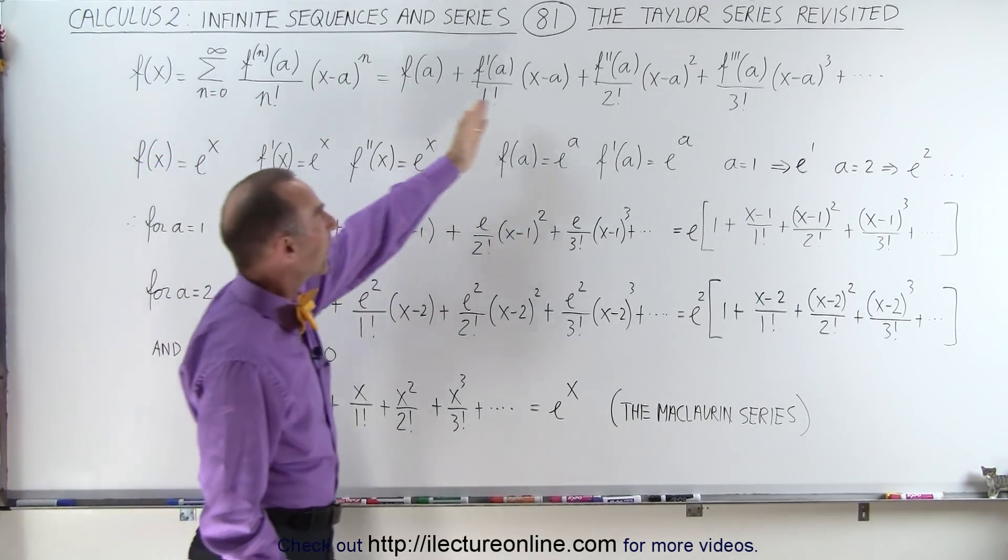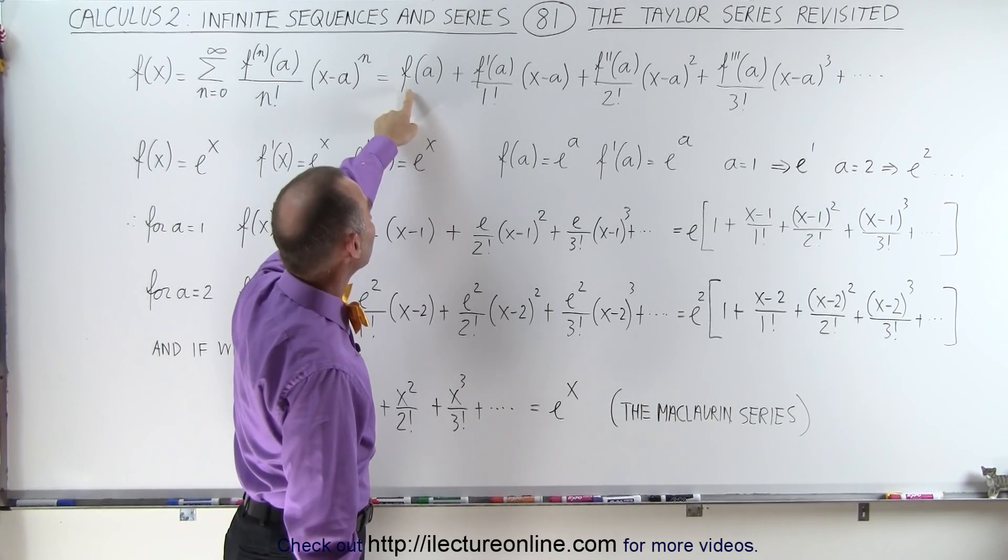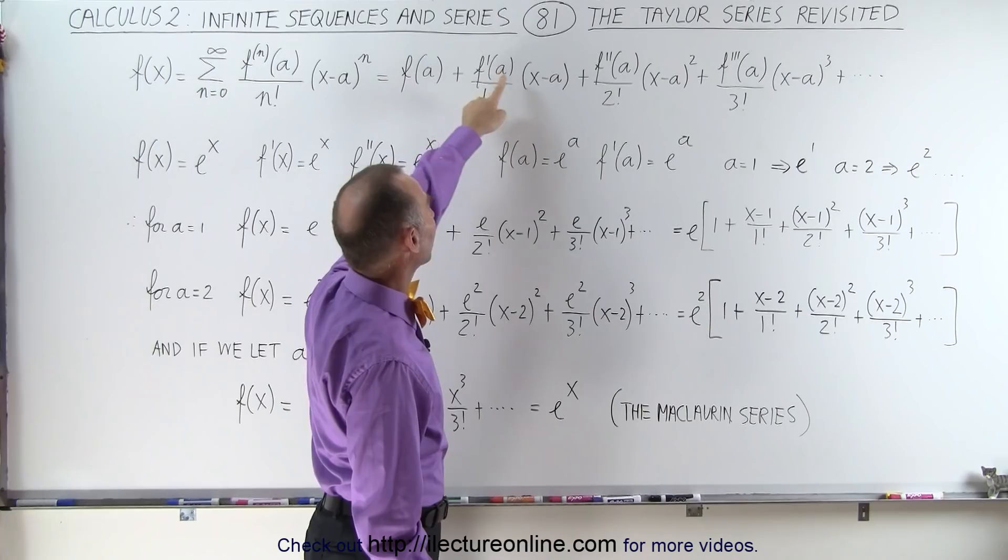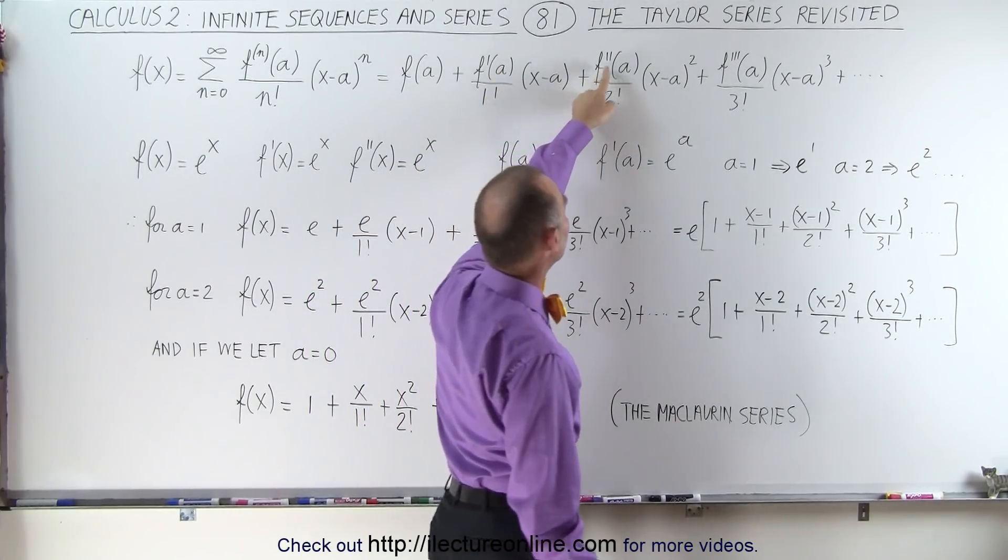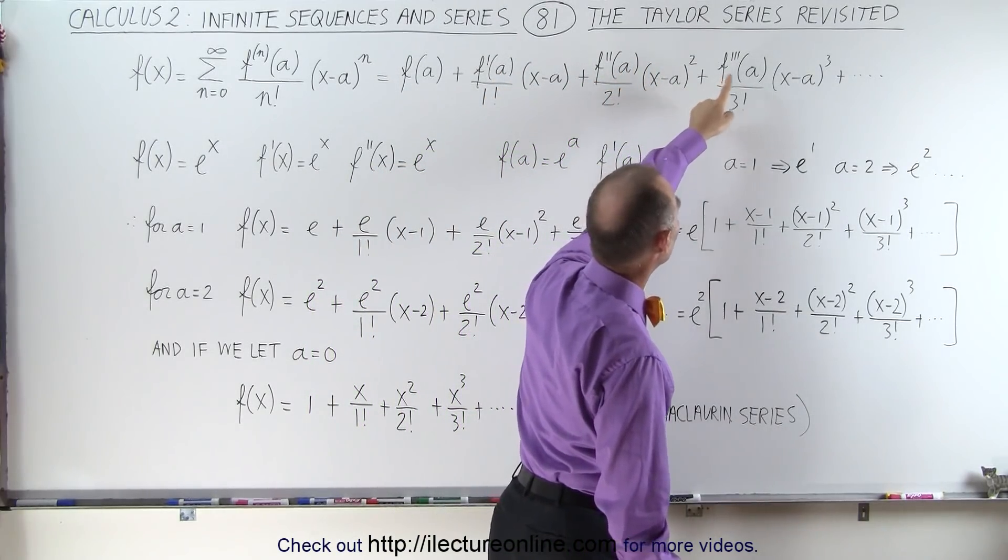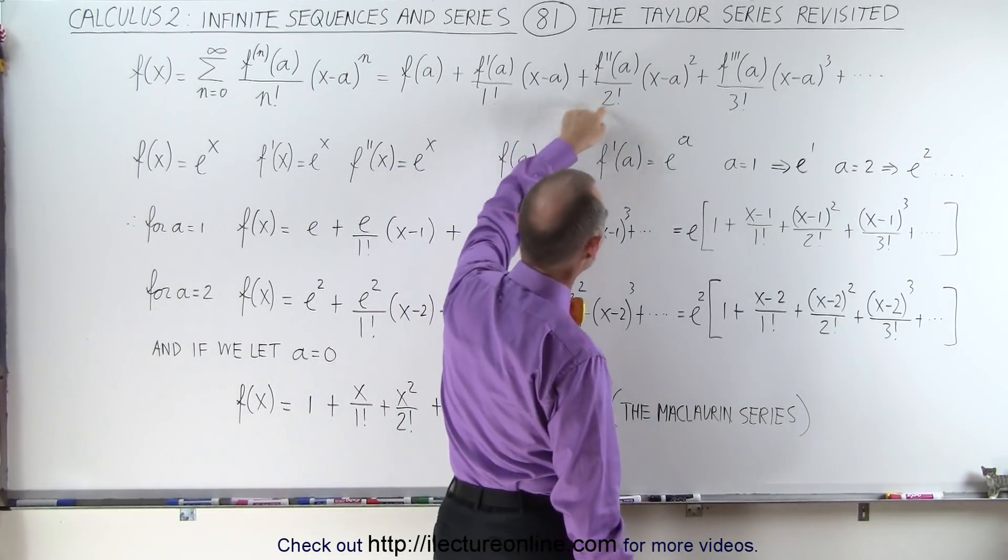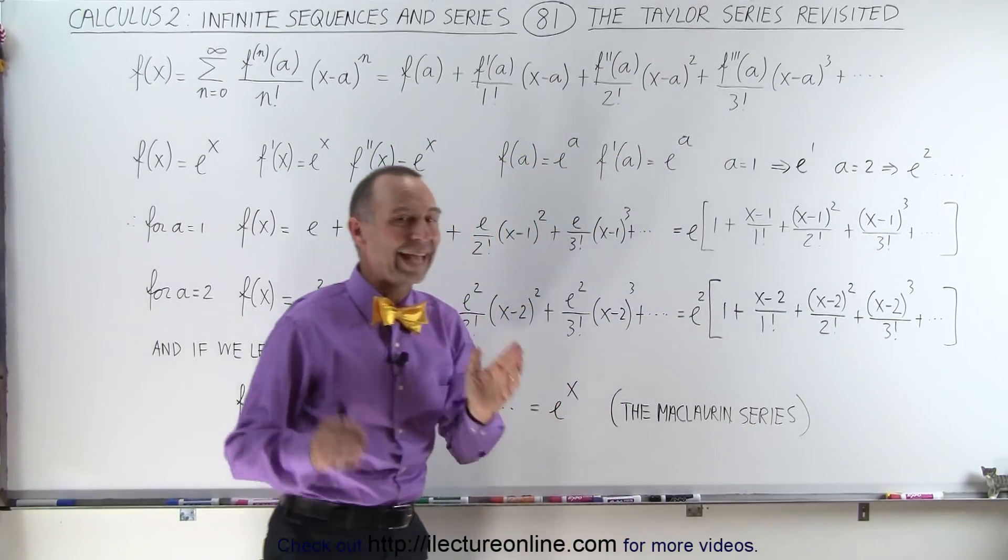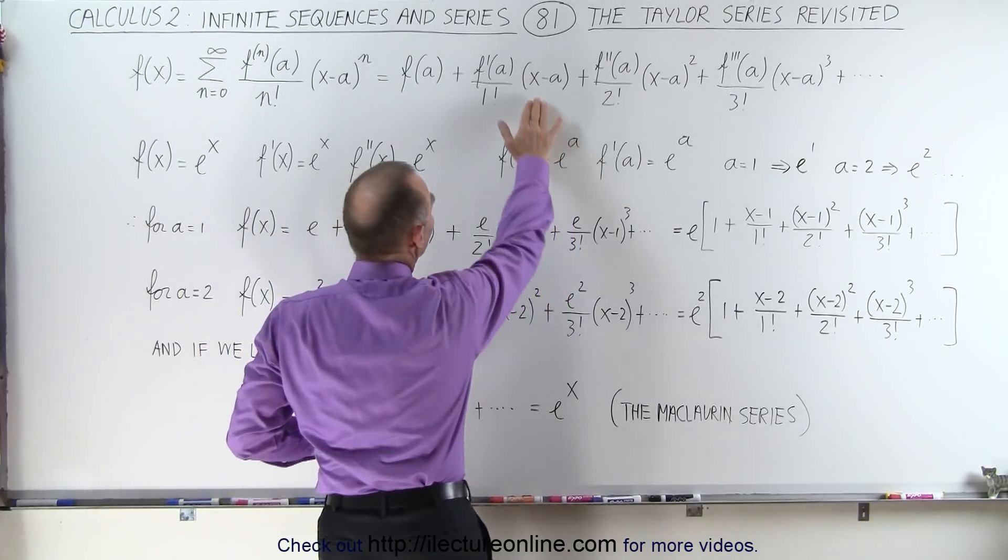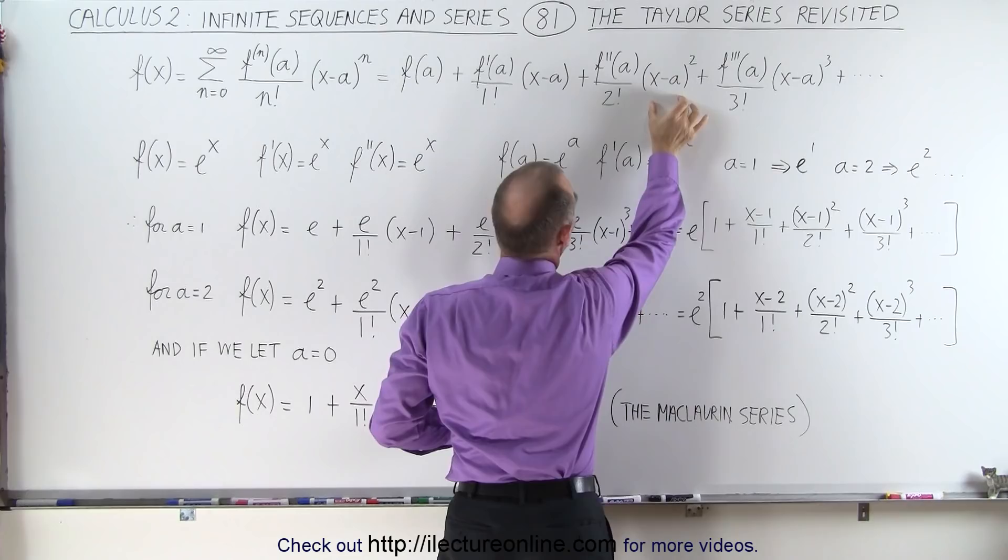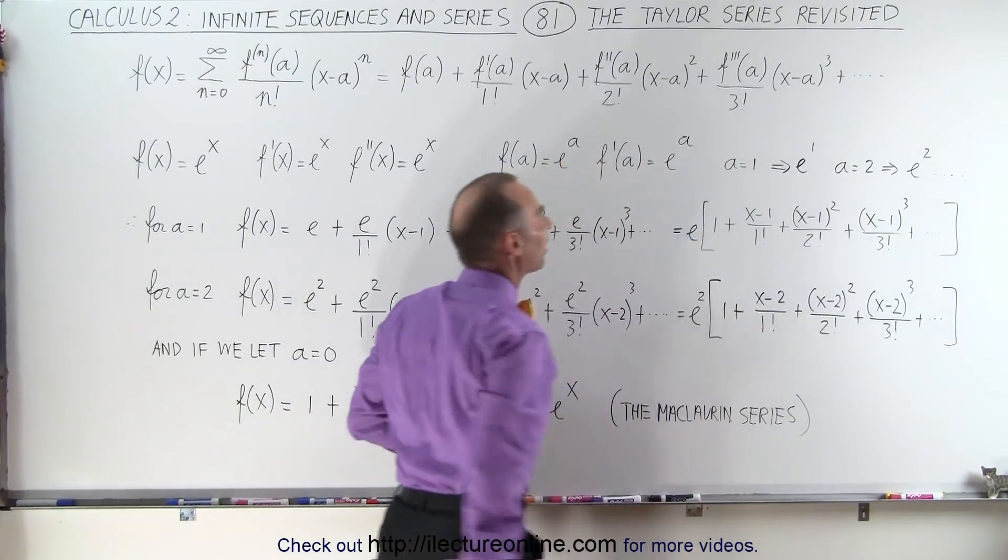And when we write it out, you can see that the coefficients are the function evaluated at a, the first derivative of the function evaluated at a, the second derivative evaluated at a, the third derivative evaluated at a, with the denominator being 1 factorial, 2 factorial, 3 factorial, and so forth. And instead of writing x, x squared, x cubed, we write (x-a), (x-a) squared, (x-a) cubed.